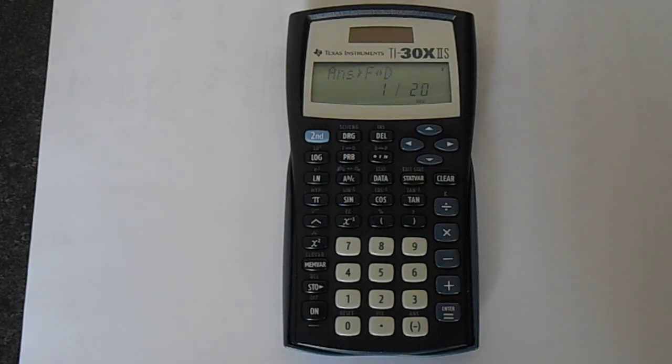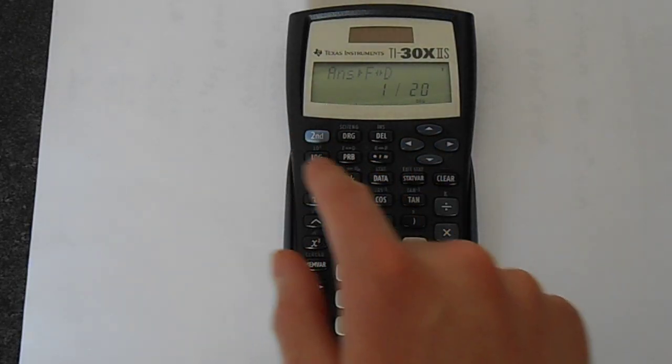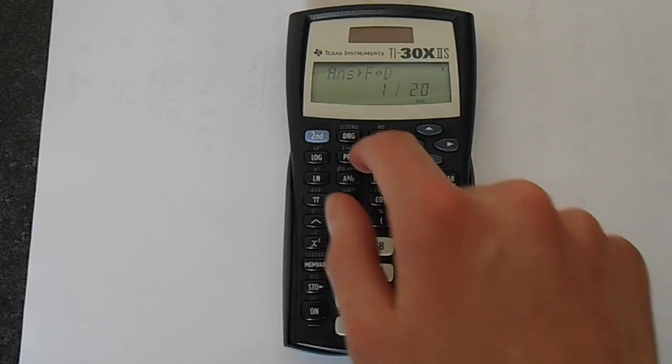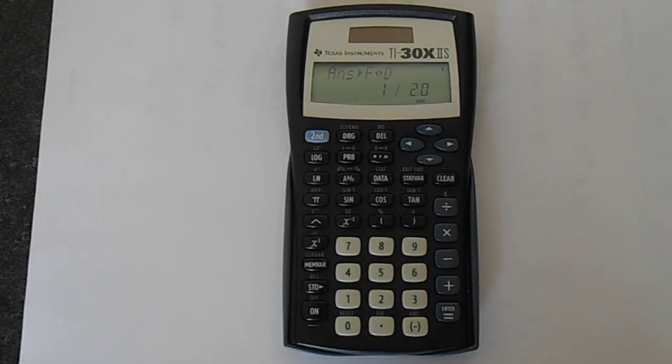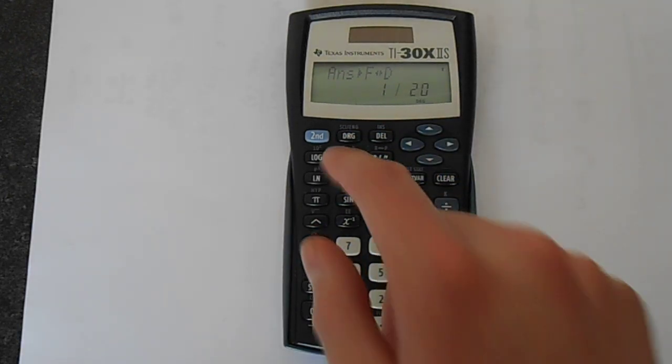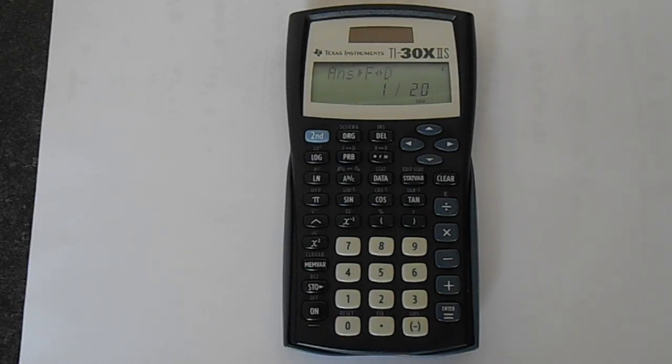So there's how you do the conversions, basically using this button up here, the fraction to decimal button, and it does it all for you. Just put the stuff in the memory, use that button, enter, done. Okay, hopefully this video has been helpful to you and thank you for watching.